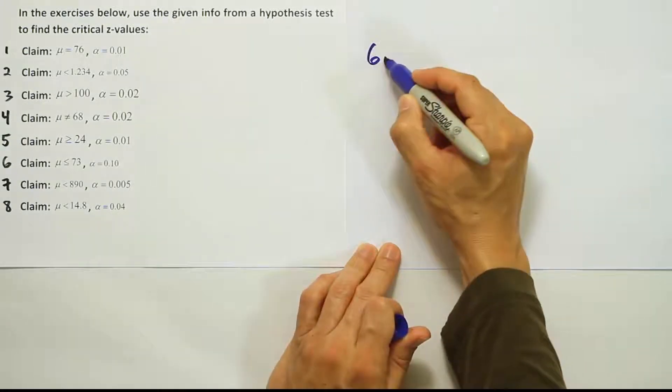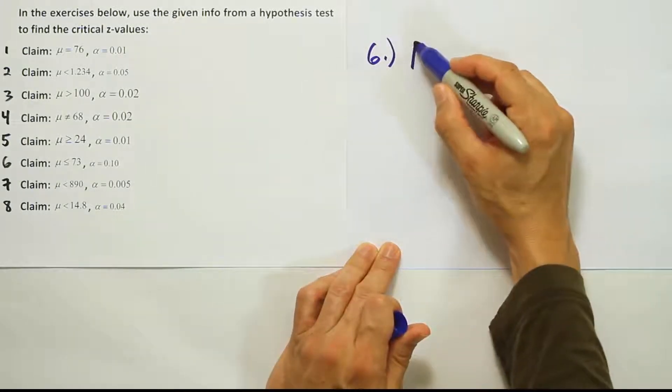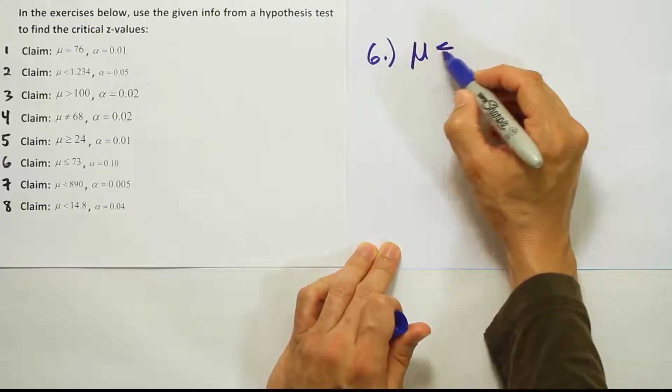Okay, so now we're doing number six from this list of problems. Number six tells us that the claim is that the mean is less than or equal to 73.